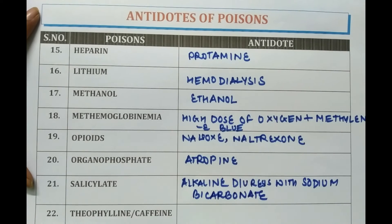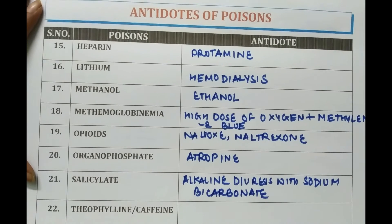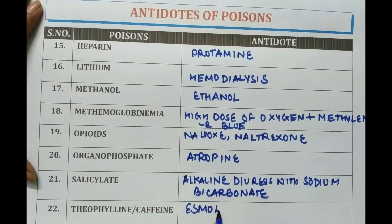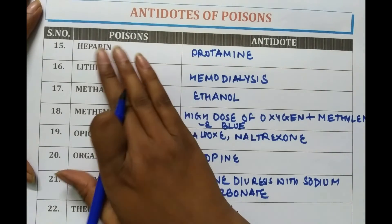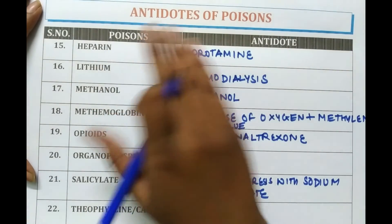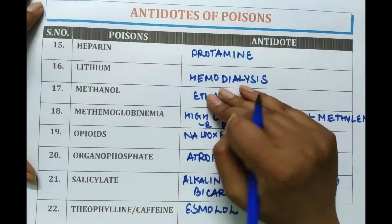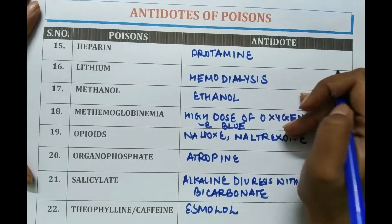In case of theophylline or caffeine poisoning, esmolol is given. In case of heparin poisoning, protamine sulfate is given as the antidote.